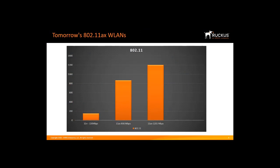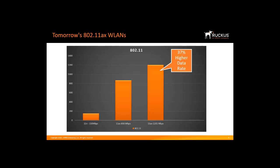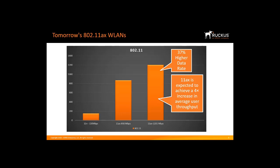For 802.11n, the maximum theoretical speed was 150 Mbps per stream. 11ac increased this to 866 Mbps per stream — over a six-fold increase. 11ax will increase speed to 1201 Mbps per stream, a 37% increase over 11ac rather than a six-fold jump. However, the new amendment is expected to achieve a four-times increase in average user throughput due to more efficient spectrum utilization and improvements for dense deployments.